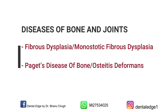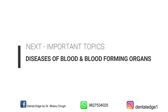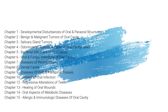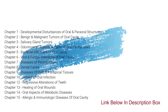So friends, we are done with important topics from diseases of bone and joints. In the next video I will be covering important topics from diseases of blood and blood forming organs. I have already covered important topics from 15 chapters, as you can see on the screen. I am mentioning the link below in the description box as well as on the screen. You can check them as well.